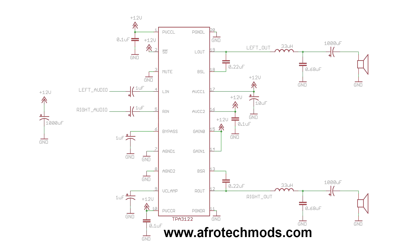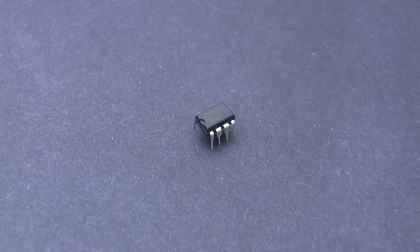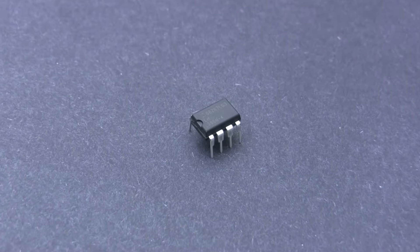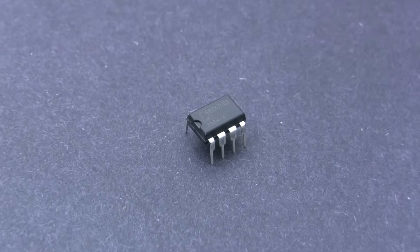But what if you just want a simple amplifier that can drive a speaker without all the fancy switch mode circuitry? The LM386 is an all-in-one class AB audio amplifier chip and it's the easiest way to power a speaker.